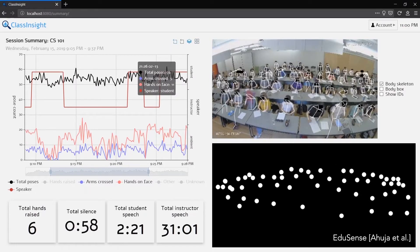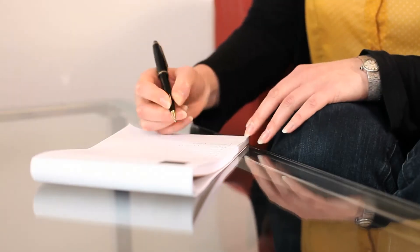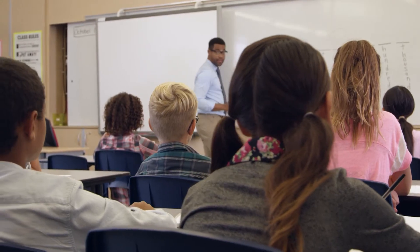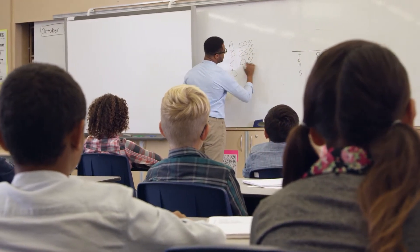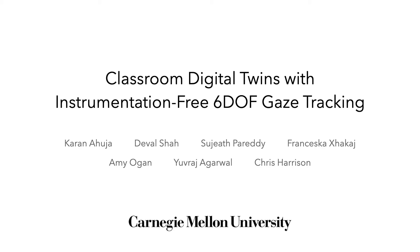Classroom sensing is an important and active area of research with great potential to improve instruction. Complementing professional human observers, automated systems can attend every class and capture fine-grained details of all occupants. However, class sensor data is most interpretable and useful when properly contextualized. Classrooms are complex, three-dimensional spaces containing foci of different functions, such as projection screens and whiteboards, as well as students and instructors. In this paper, we explore the idea of a classroom digital twin, which can serve as a rich contextual container for class sensor data.